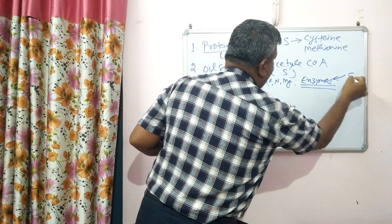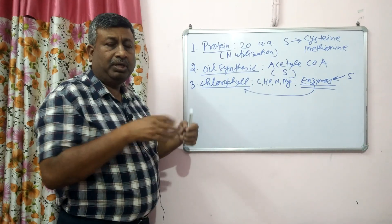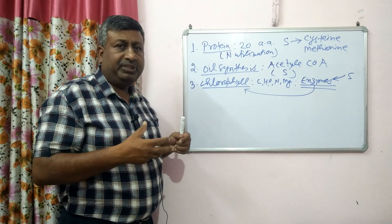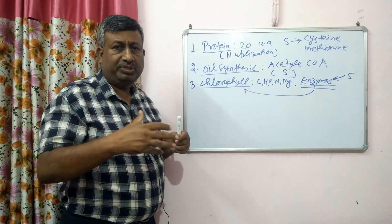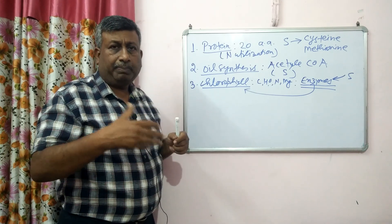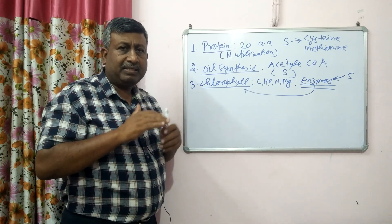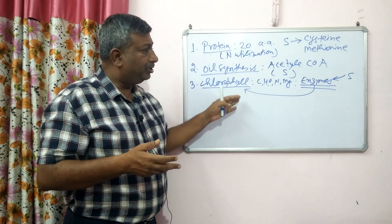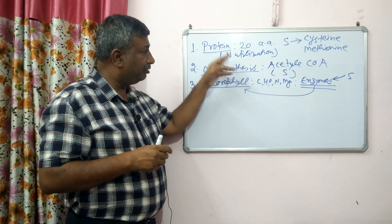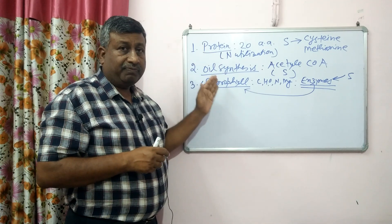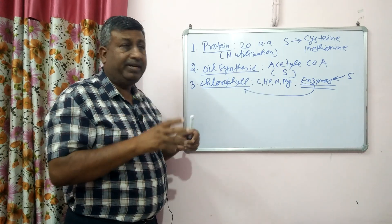Sulfur activates these enzymes, which are then involved in chlorophyll formation. Under deficiency of sulfur, the activity of these enzymes is poor and chlorophyll formation is reduced. That is why sulfur deficiency causes chlorosis — loss of chlorophyll. So sulfur is not directly involved in chlorophyll formation but activates the enzymes responsible for it.